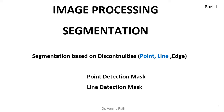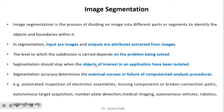Welcome to this channel. The main topic of this video is segmentation, and the subtopic is segmentation based on discontinuities. Point and line detection are covered. First, let us see what is meant by segmentation. Image segmentation is a process of dividing an image into different parts or segments to identify the objects and boundaries within it.